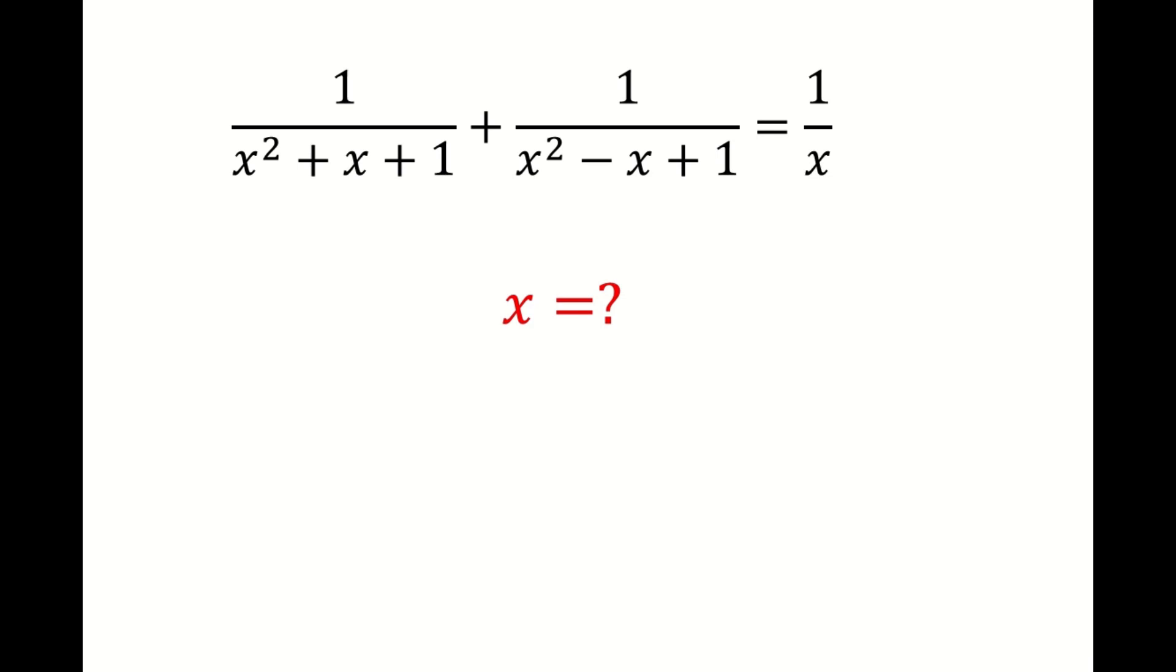Hello everyone, welcome to the SQRT channel. In this video, we are going to talk about solving an equation. In this equation, we have two terms on the left hand side and one term on the right hand side. We have 1 over x squared plus x plus 1 plus 1 over x squared minus x plus 1 equals 1 over x, and we are going to find x here.